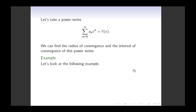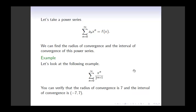Let's look at the following example and quickly review these two concepts. Let's say I have the following power series: summation from 0 to infinity, x to the power n divided by 7 to the power n plus 1. I can compute the radius of convergence and interval of convergence for this power series by using the ratio test. The radius of convergence is 7, and the interval of convergence is the open interval from negative 7 to positive 7.